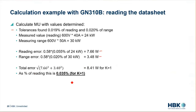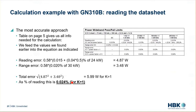A more accurate approach uses the table on page 5, which gives all the info needed for the full calculation. Feeding the values into that equation, the reading error is again 0.58 times the formula, taking the reading error for the relevant frequency, giving 4.87 watts. Doing the same for the range error and applying geometric addition, we get 5.99 watts or 0.024 percent, which is lower than what we calculated with the lookup table.